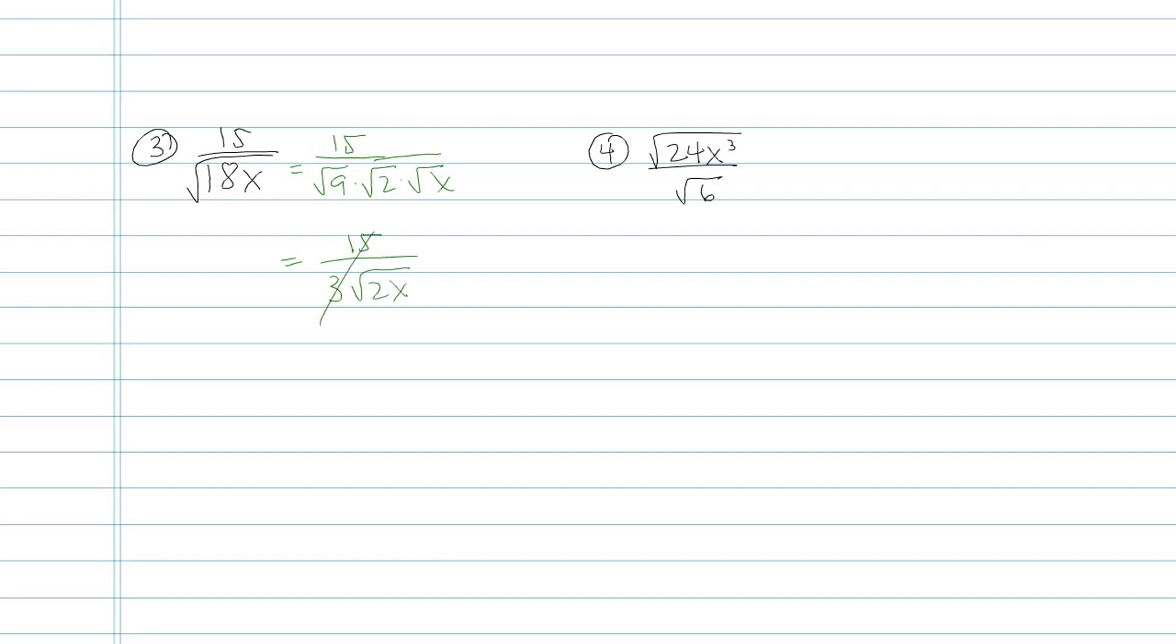Okay, 15 over 3 reduces to 5 over 1. So here's where I am so far: 5 over square root of 2x. Now it doesn't seem like I made a lot of progress. I still have a square root in the bottom, but at least now the numbers are smaller. So when I go to rationalize my denominator now, on top I'll have 5 outside, radical 2x. On the bottom I have square root of 2x and square root of 2x is regular 2x. Now I want to check to see if my integers could be reduced, that 5 over 2, and they cannot be reduced, so I'm done.